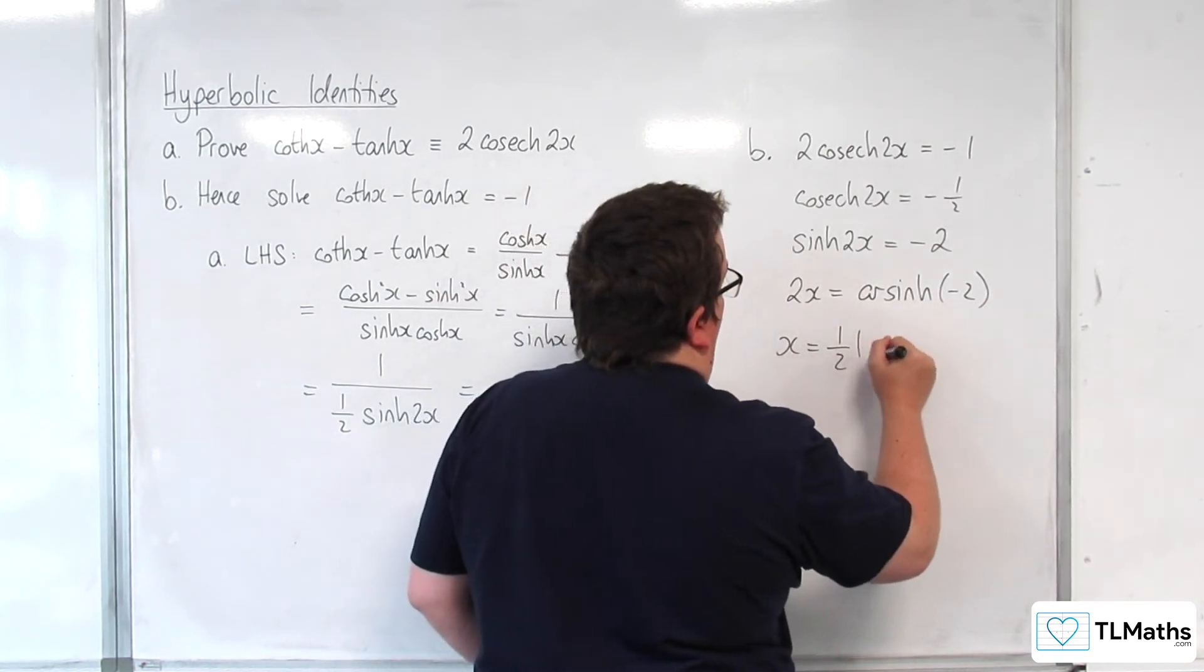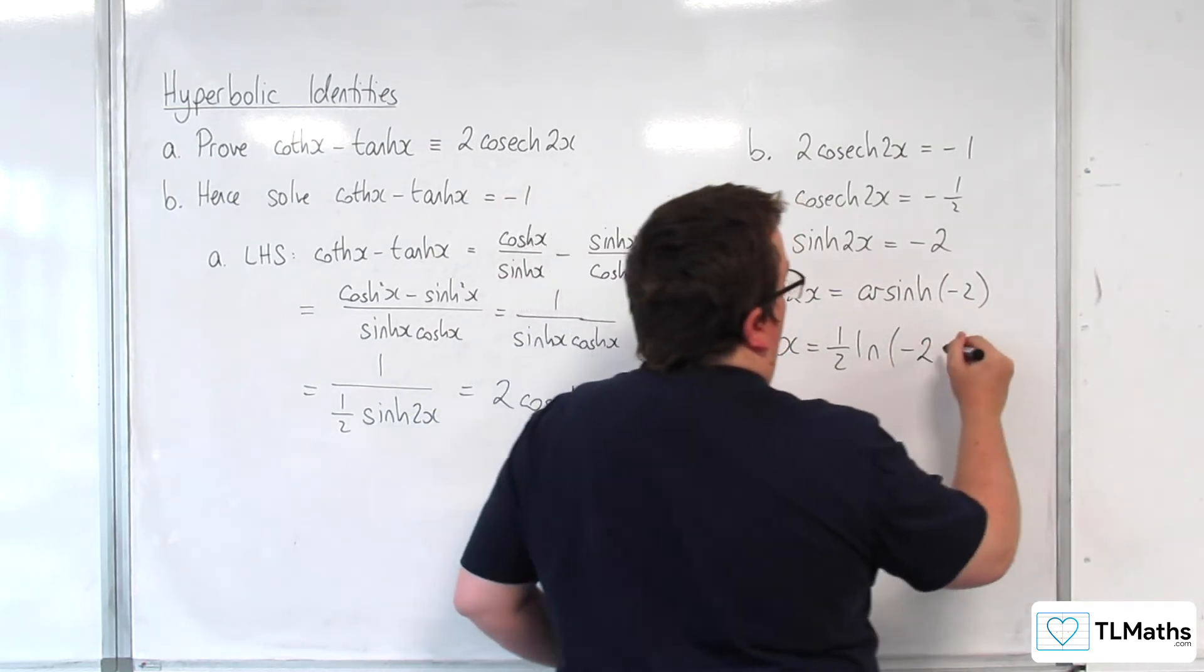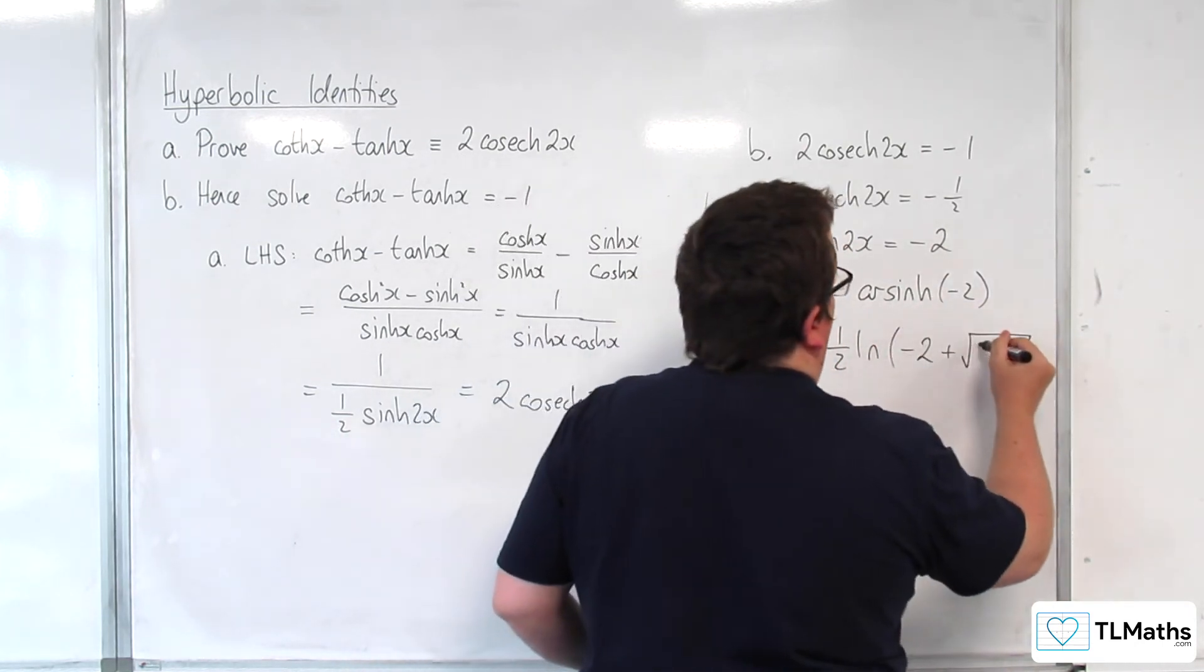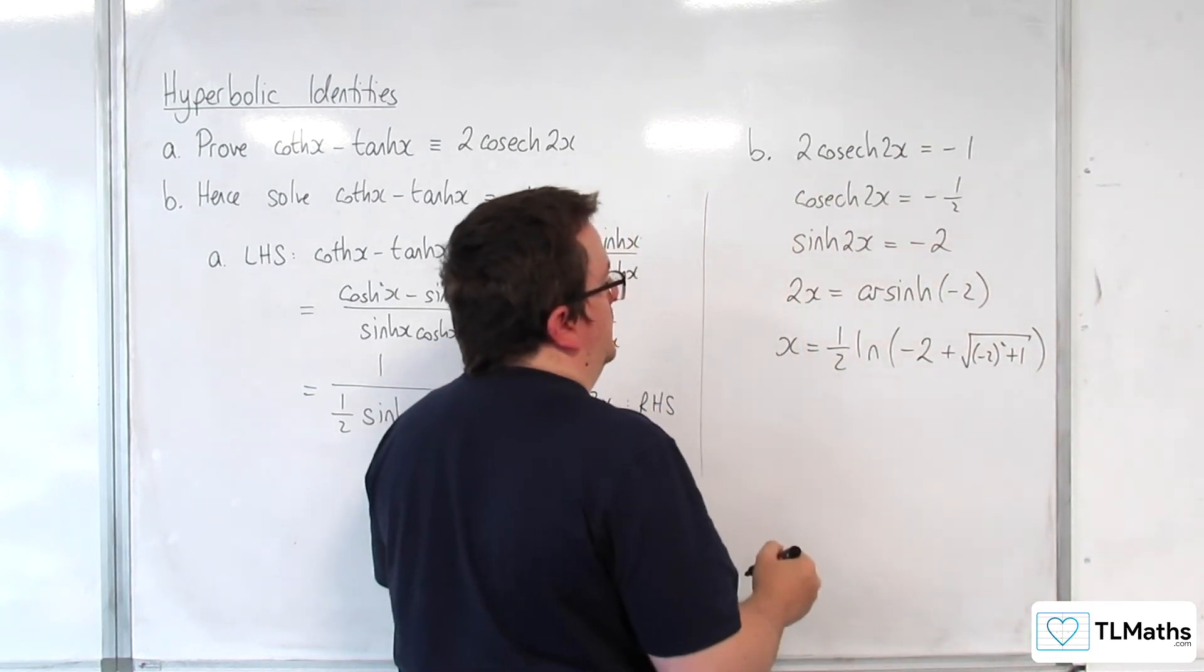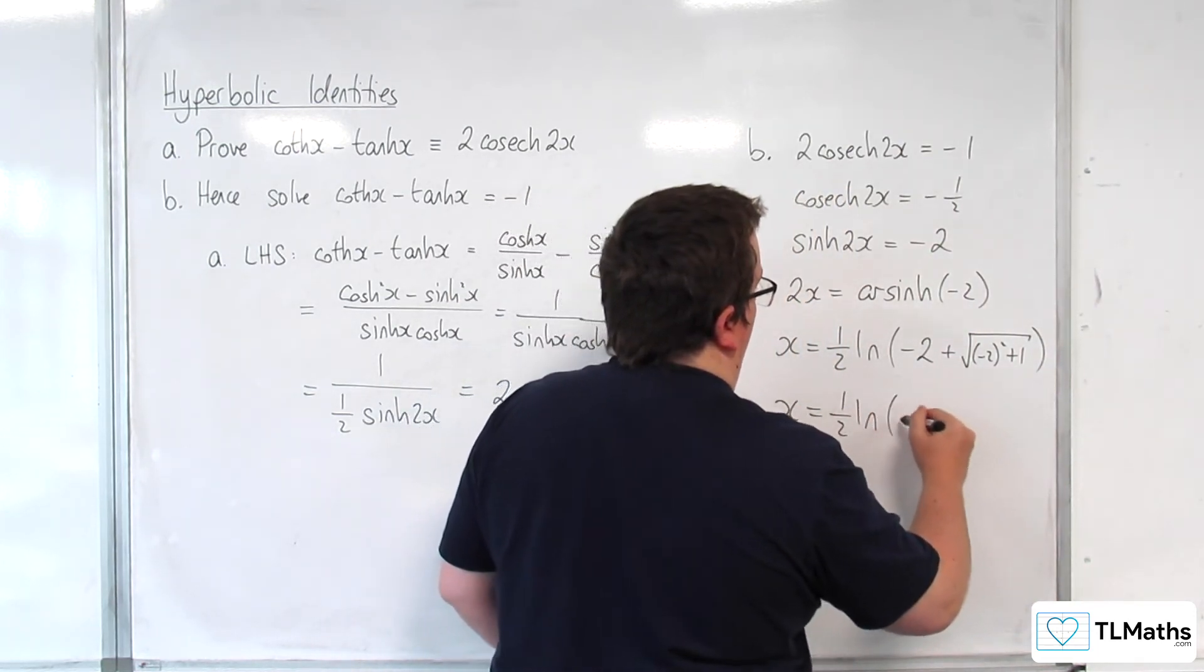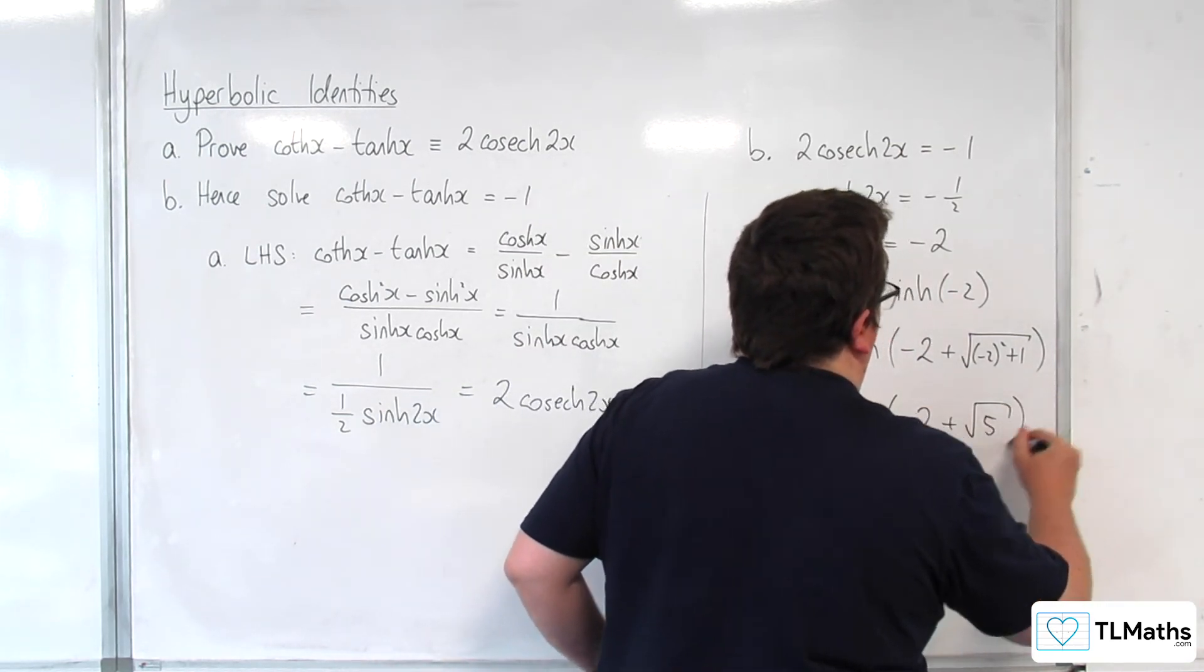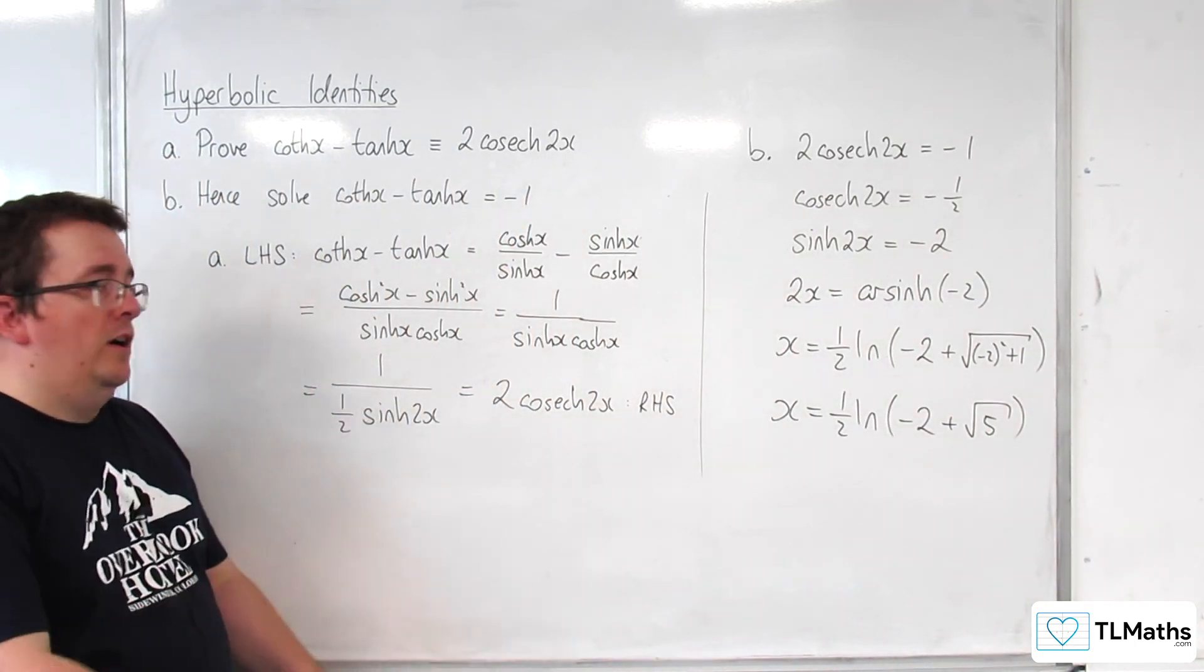So x is going to be equal to 1 half times the natural log of minus 2 plus the square root of minus 2 squared plus 1. So x equals 1 half the natural log of minus 2 plus the square root of 5. And so that is the solution I'm looking for.